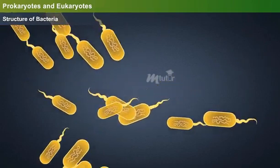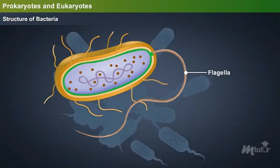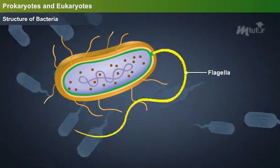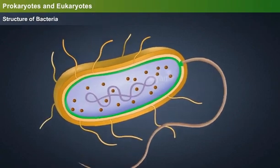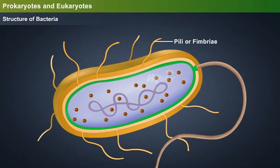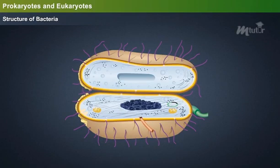Bacteria move in fluid medium with the help of flagella. Flagella are long, helical thread-like structures containing a filament, basal body and hook. Anchoring of bacteria to the host is possible through pili or fimbriae, which are hair-like appendages present on the surface of the cell. Pili are made up of a protein called pilin.